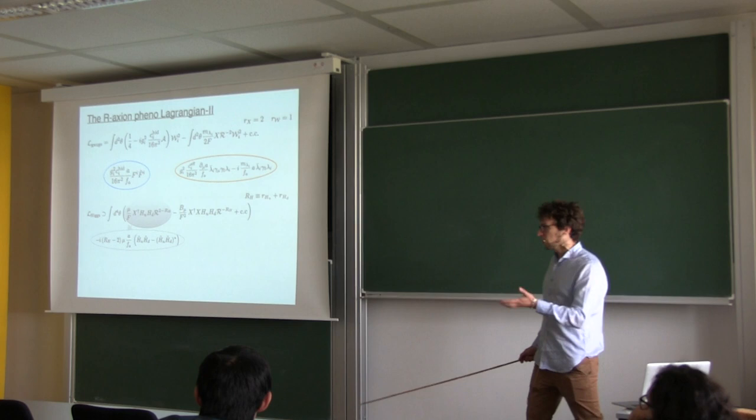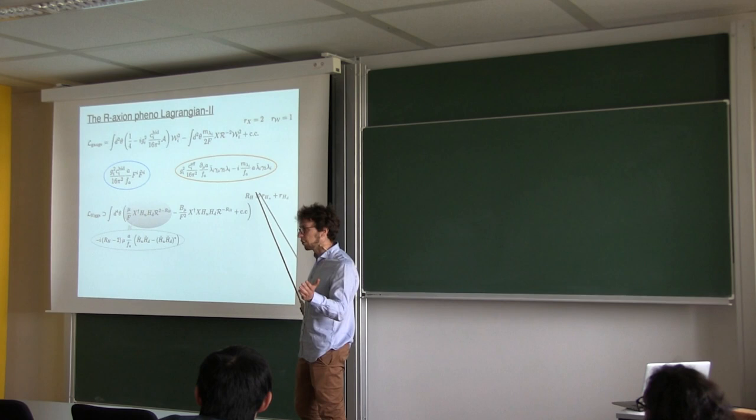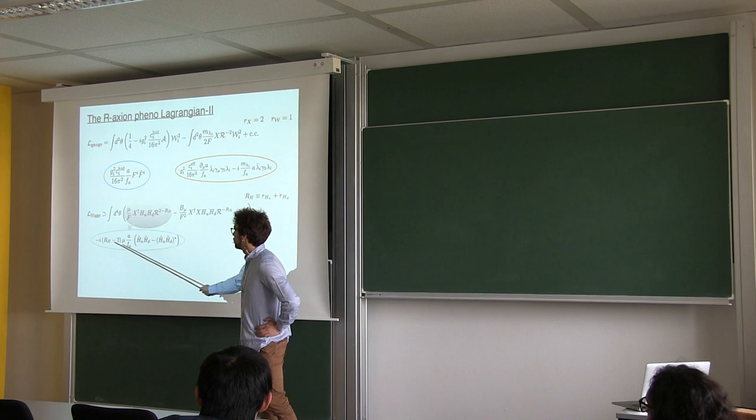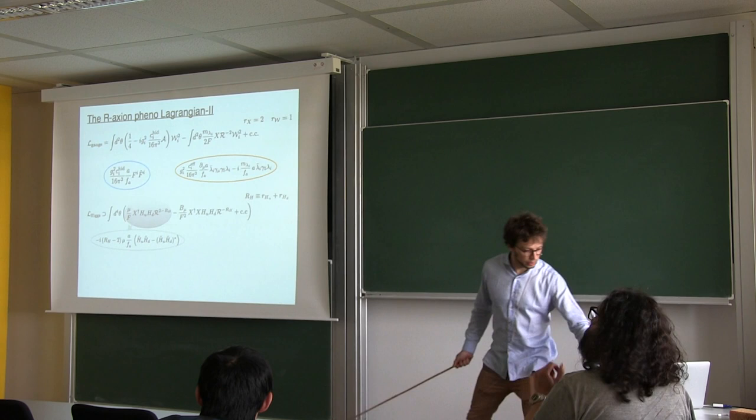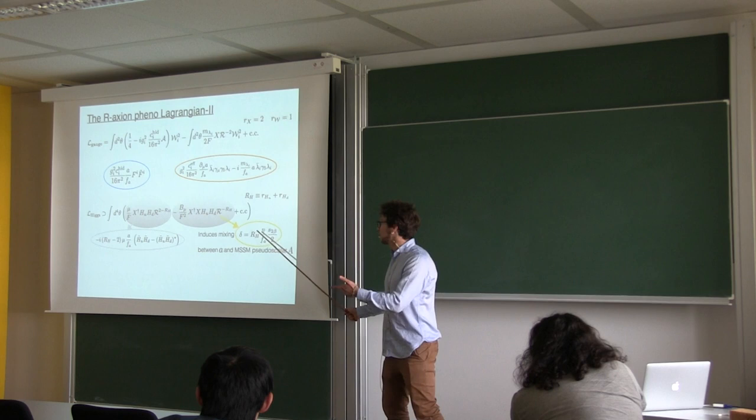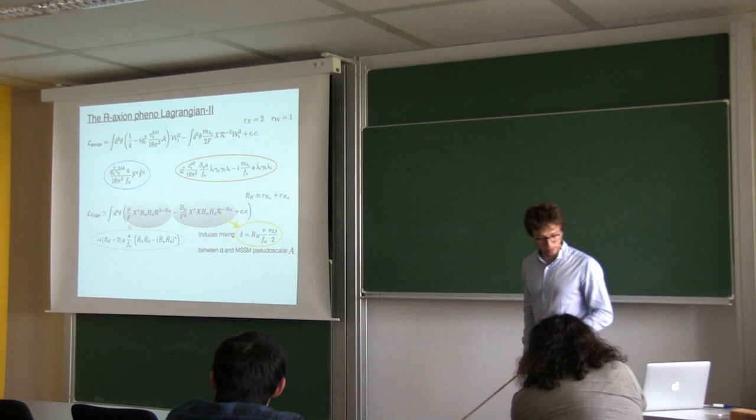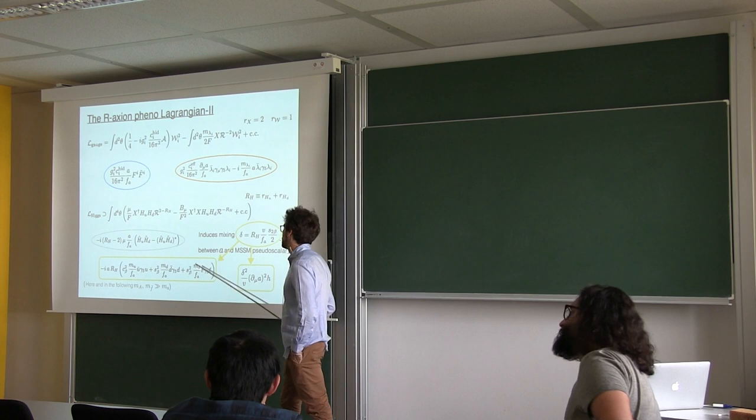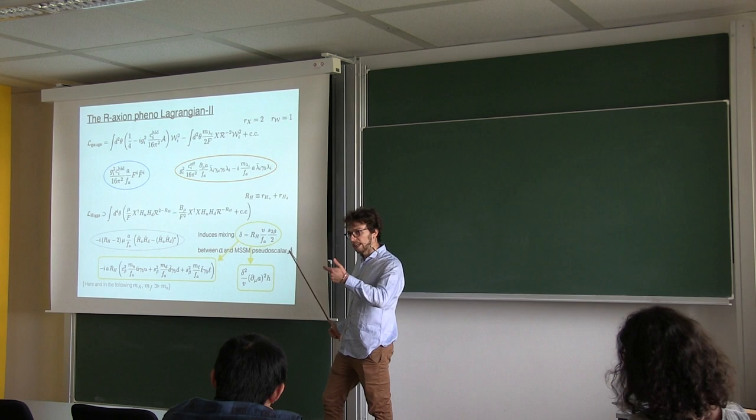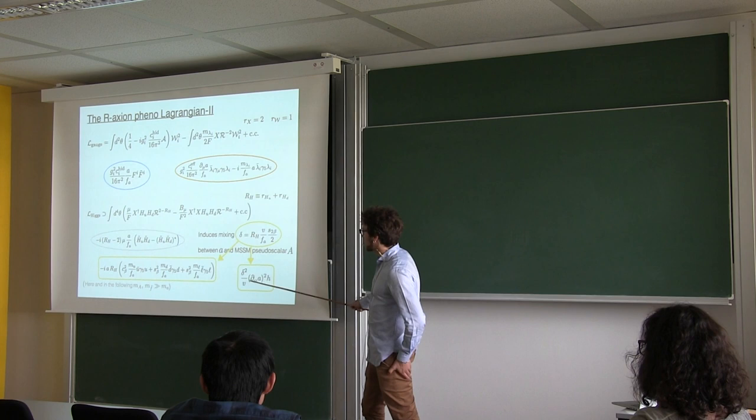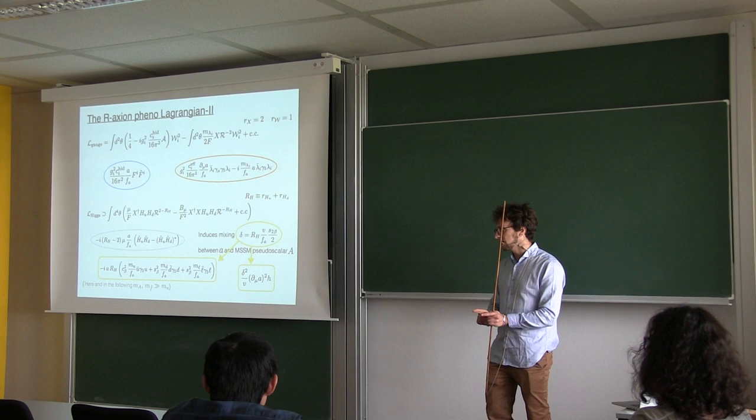Higgs phenomenology—the relation with Higgs and standard model fermions is slightly more model dependent because it depends on an arbitrary charge, which is the sum of the charges of H_up and H_down. Depending on what you choose for this value, you can have—if this value is different from 2, you induce coupling of the R-axion with Higgsinos. And if this value is different from 0, you have a mixing between the R-axion, from this term here, from the Bμ term, and the MSSM pseudoscalar A. And this mixing of this size, suppressed by Bμ over F, proportional to this charge, and with some tan beta dependence. This mixing induces couplings of the R-axion to all the standard model fields that are proportional to their masses, and they have some tan beta dependence.